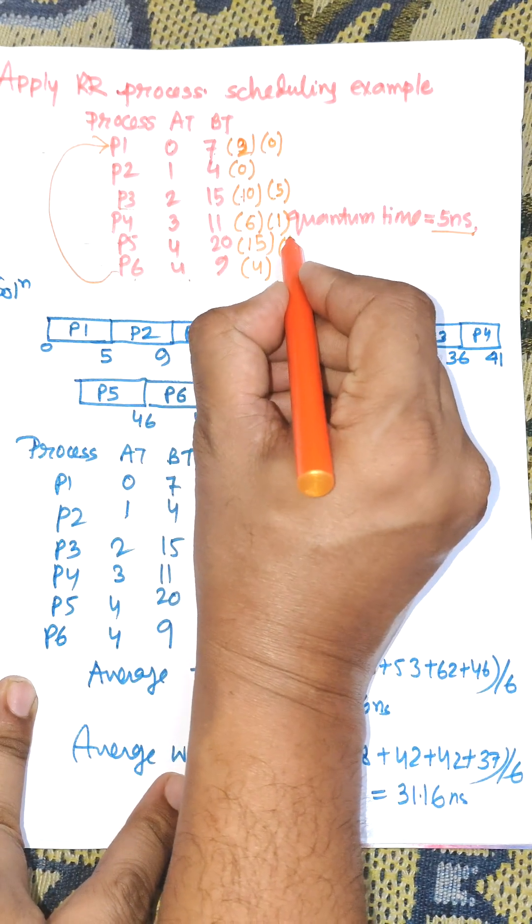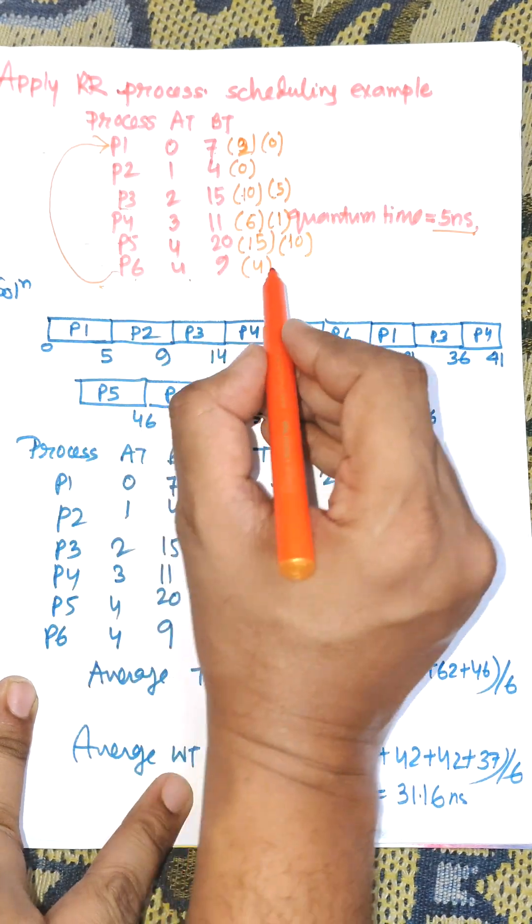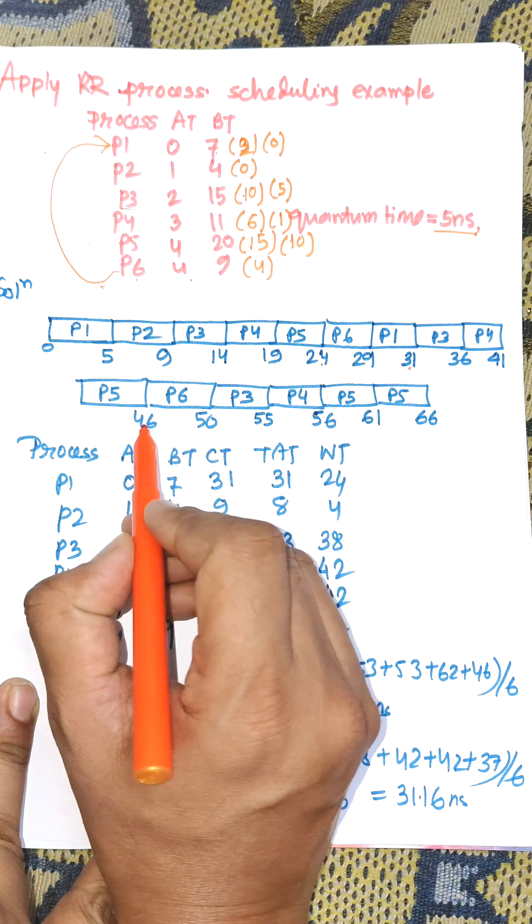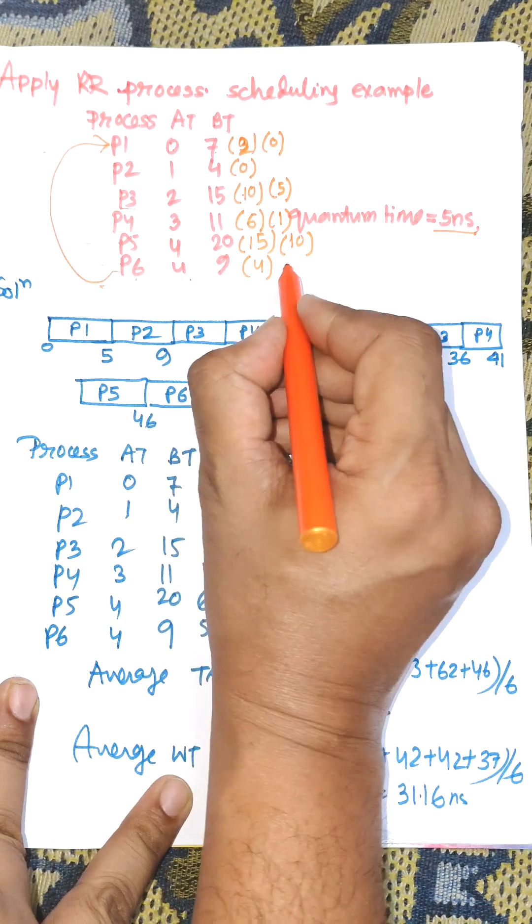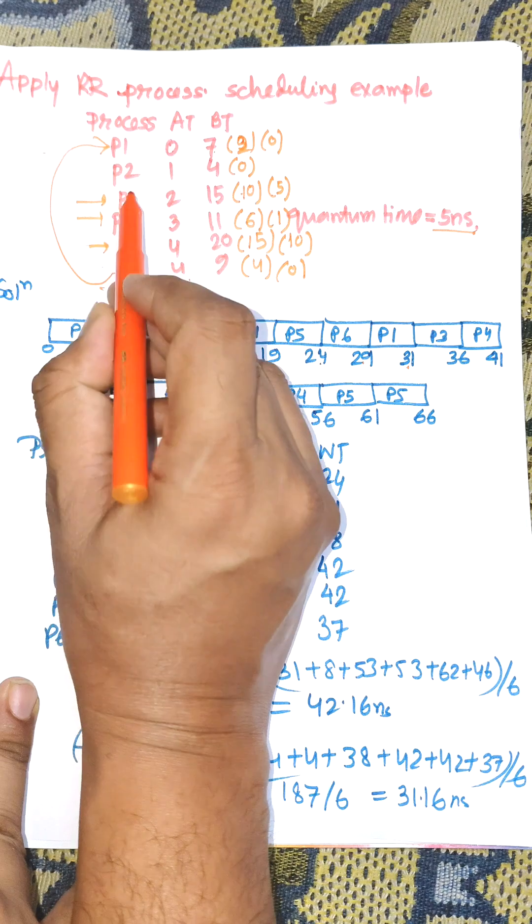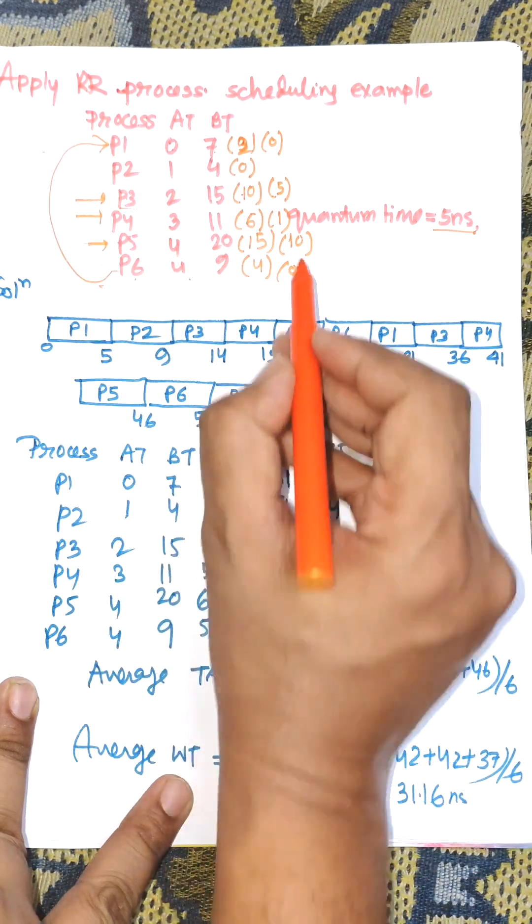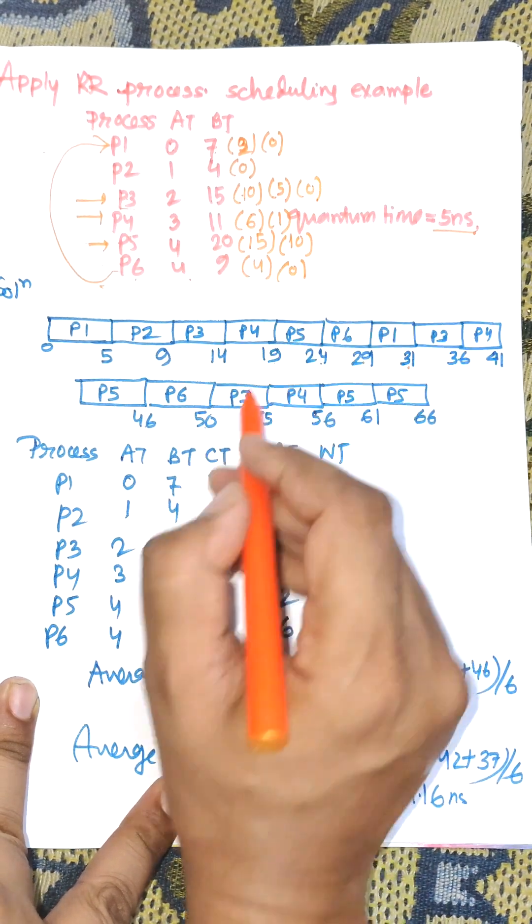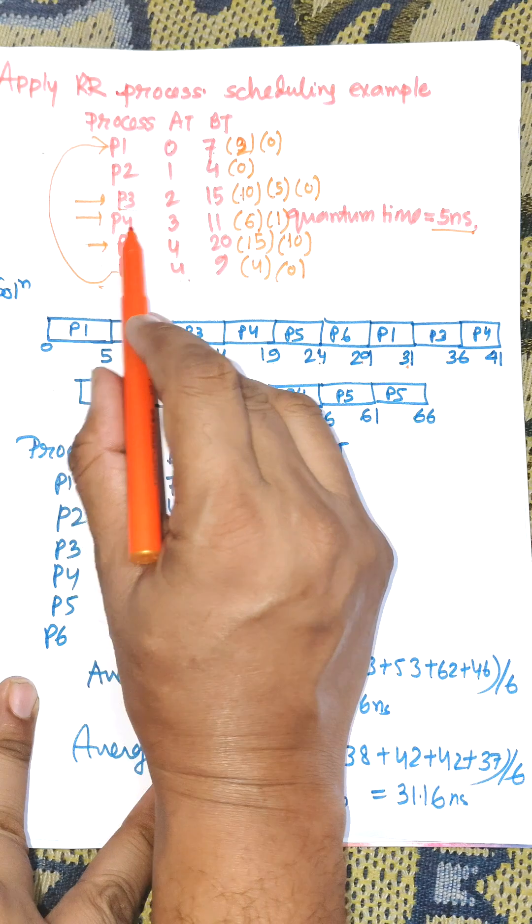P6 is executed and completes at time 50. Remaining processes are only P3, P4, and P5. P3 will be selected and executed for 5 nanoseconds, completing at time 55.